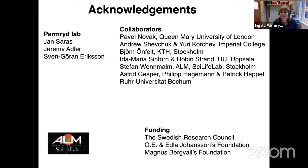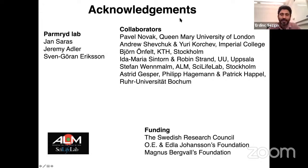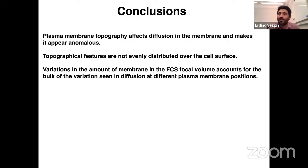Thank you very much, Ingela — beautiful talk. I think this is something we have always ignored and it's becoming more and more clear that we cannot ignore it anymore. The first question: you're talking about topology differences at the microscopic level, but there are also nanoscale topologies like caveolae or very small invaginations. For instance, we do STED FCS — and these small topological features could bias STED FCS measurements, especially if there's sorting due to curvature. What do you think?